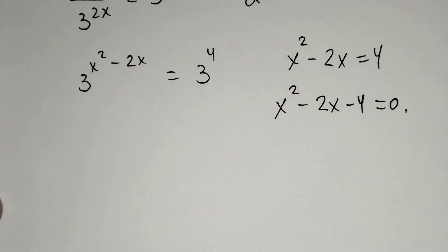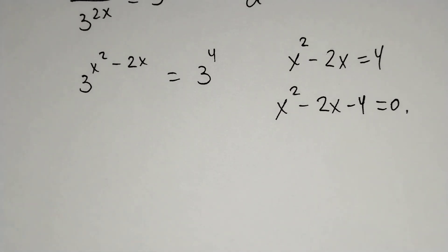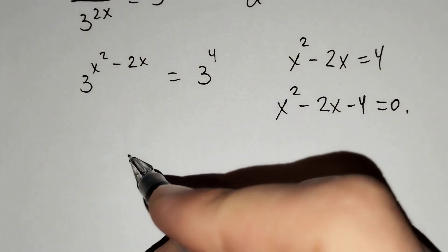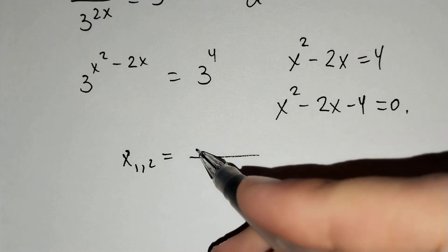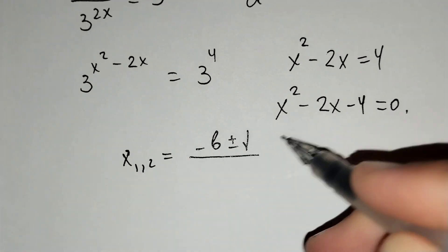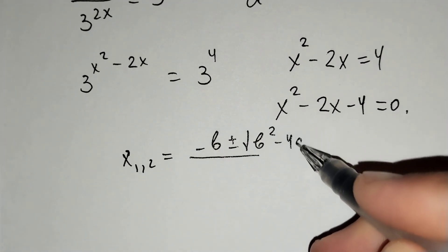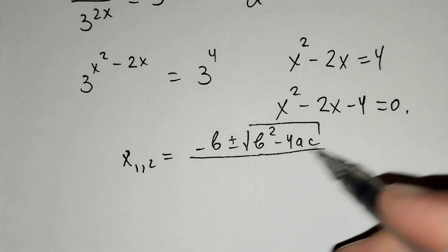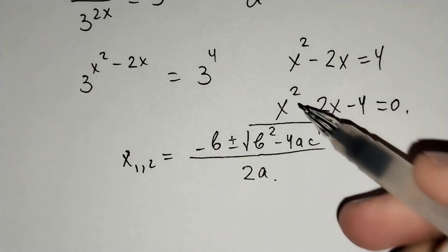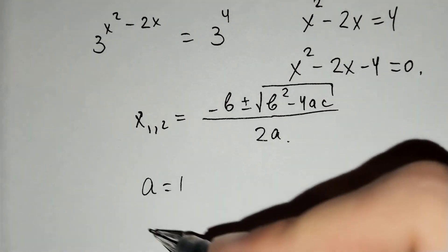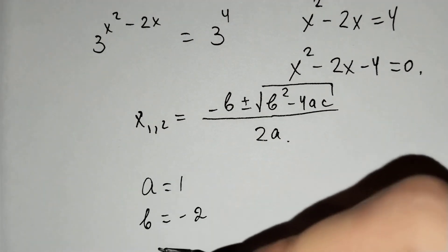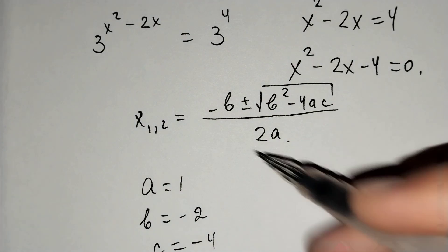And for the formula of the quadratic equation, x1 and 2 equals negative b plus minus the square root of b squared minus 4ac over 2a. In this example, a equals 1, b equals negative 2, and c equals negative 4.